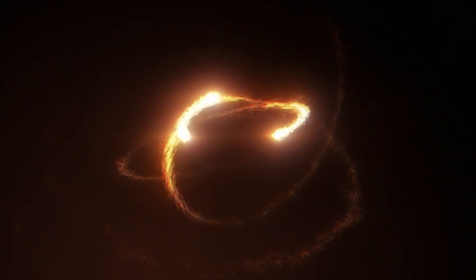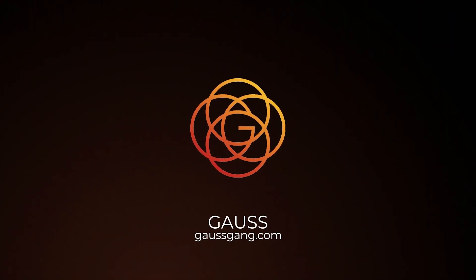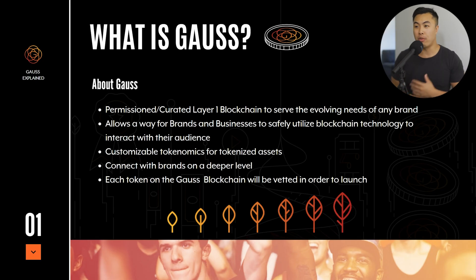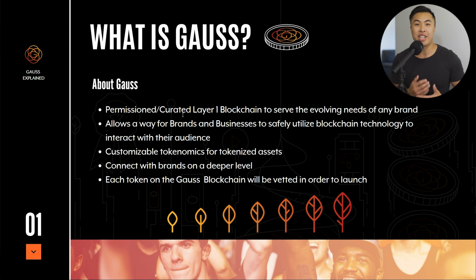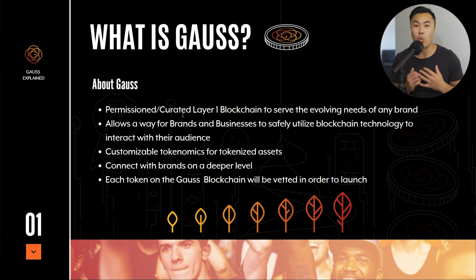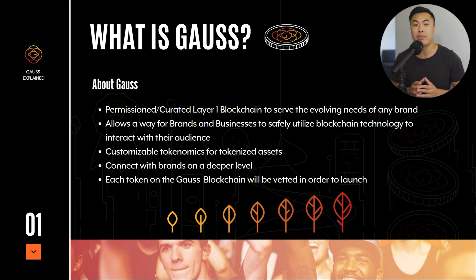What is Goss? Goss is a permissioned layer one blockchain to serve the evolving needs of any brands. As the world is constantly changing, web3 and blockchain technology is at the forefront of innovation. And Goss is leading that charge to allow a way for brands and businesses to safely utilize blockchain technology to interact with their audience in a whole new way. Goss is able to help brands create customizable tokenomics for tokenized assets and actually help them launch in the Goss ecosystem.